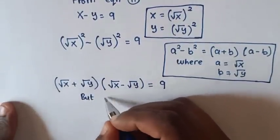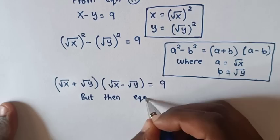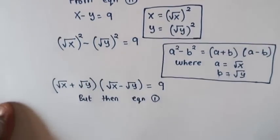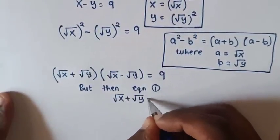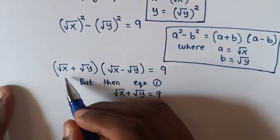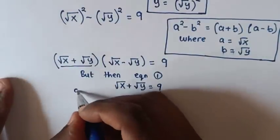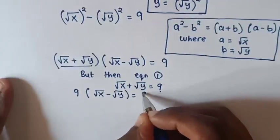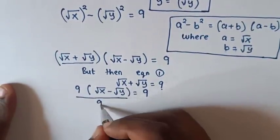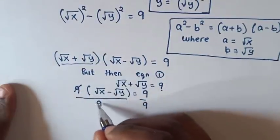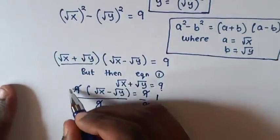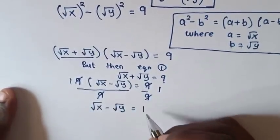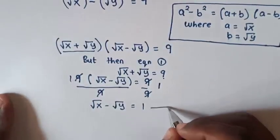From equation 1, square root of x plus square root of y equals 9. We substitute this 9 in place of (square root of x + square root of y), giving us 9 times (square root of x − square root of y) equals 9. Dividing both sides by 9, we get square root of x minus square root of y equals 1. We call this equation 3.